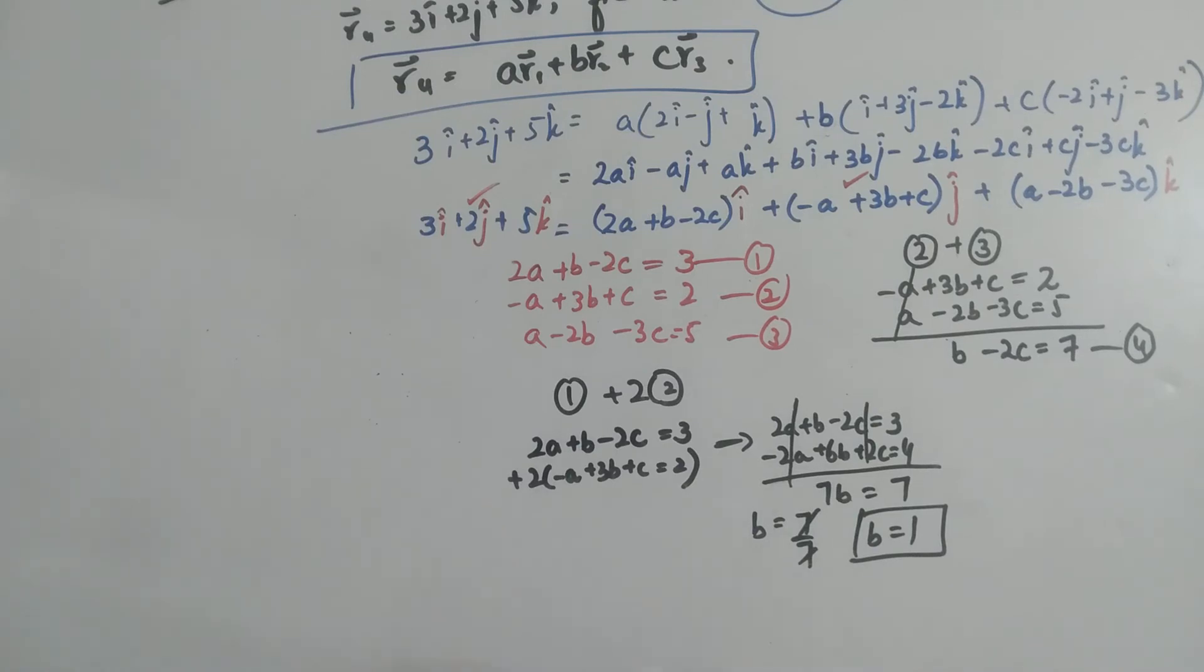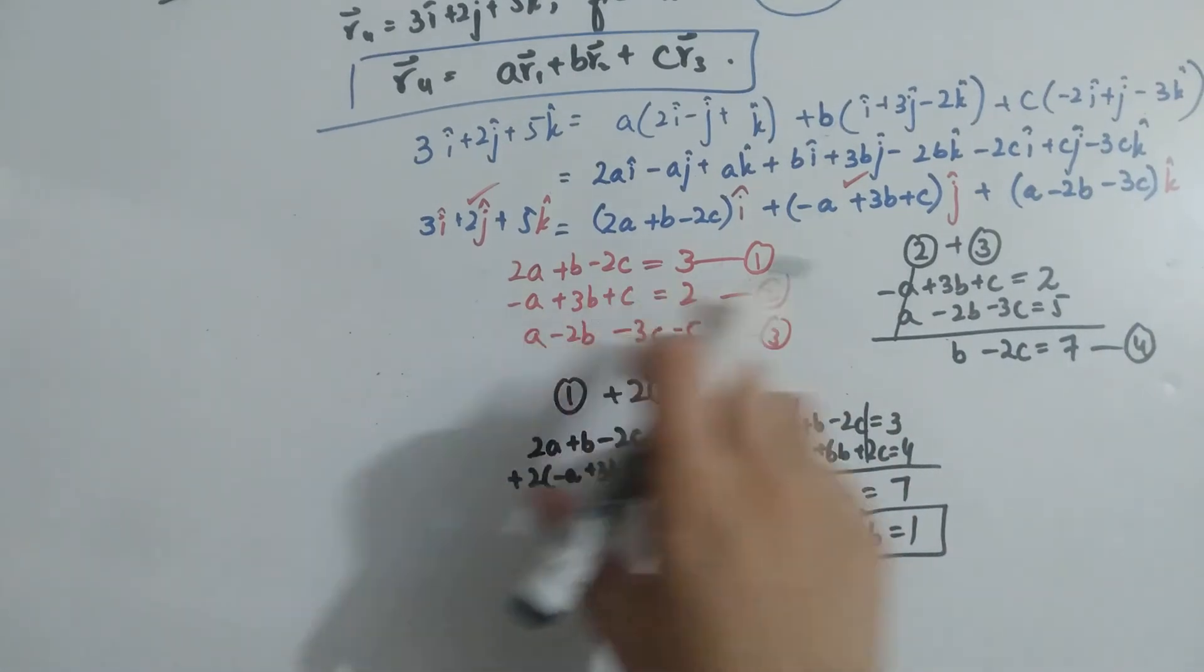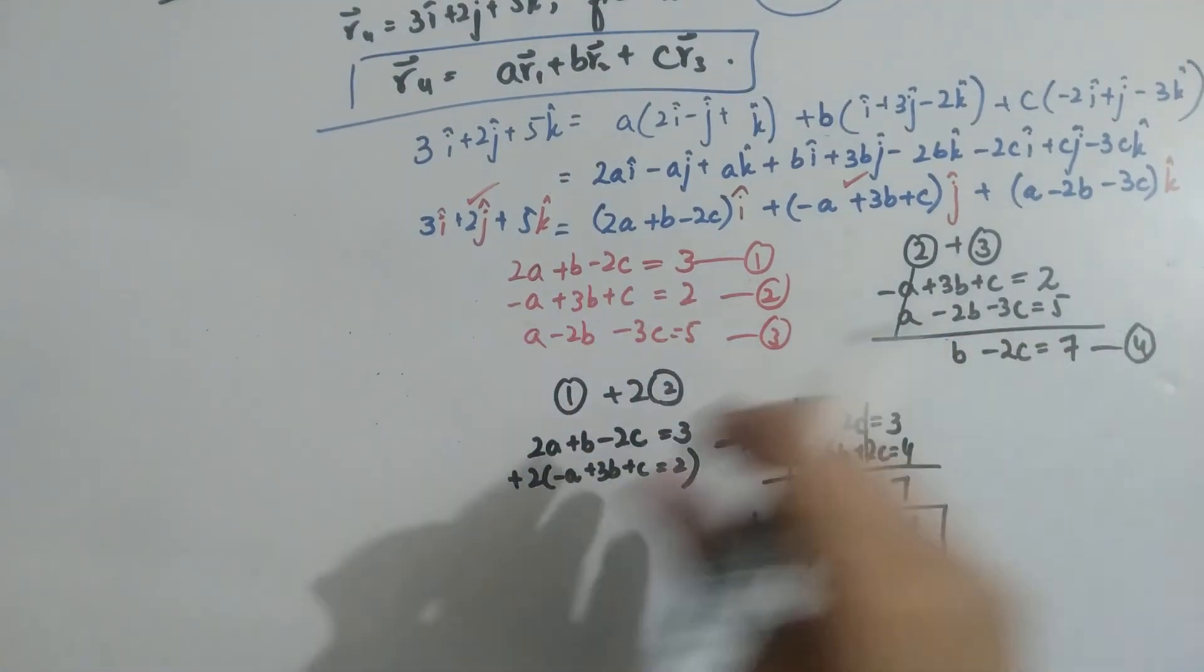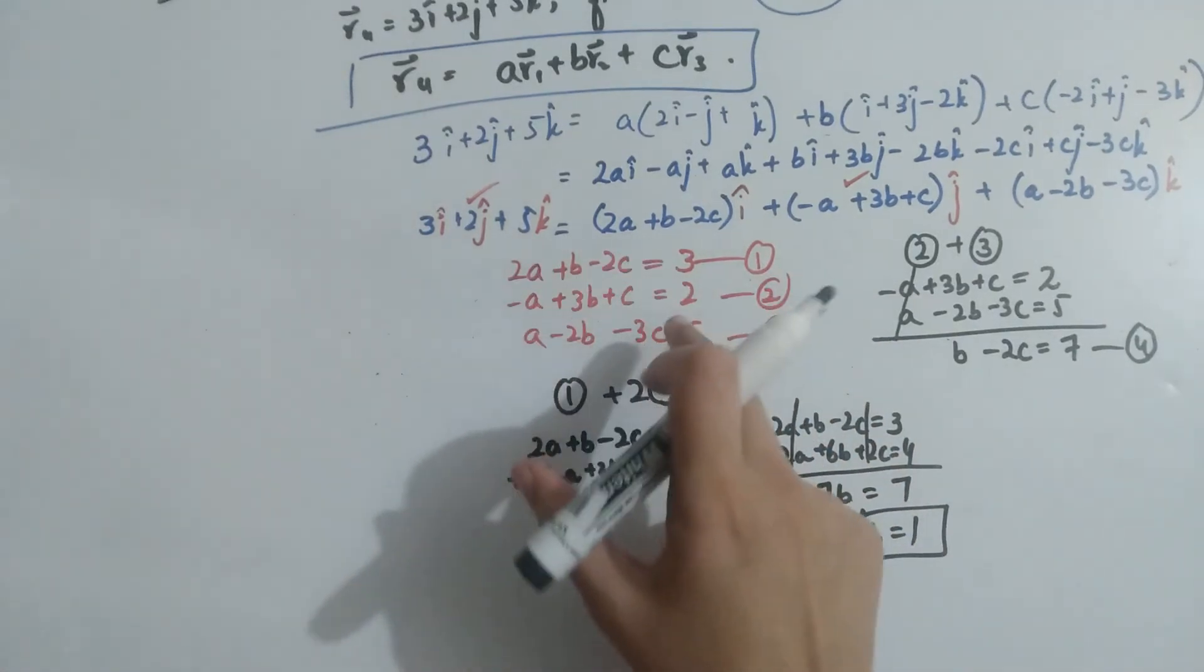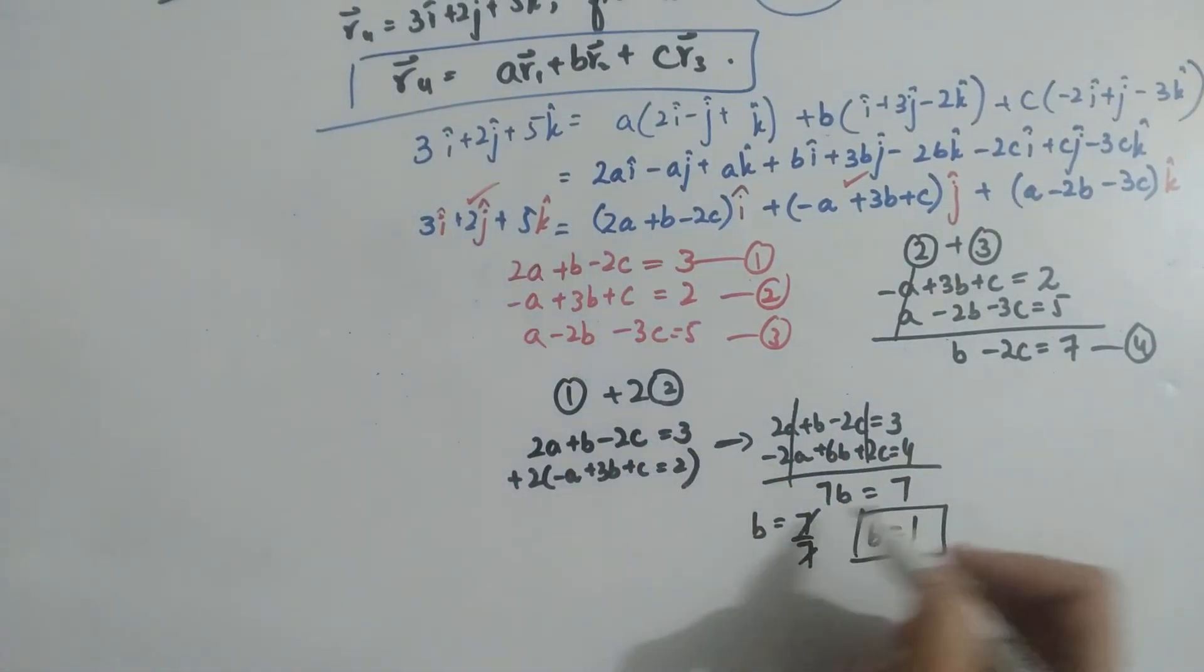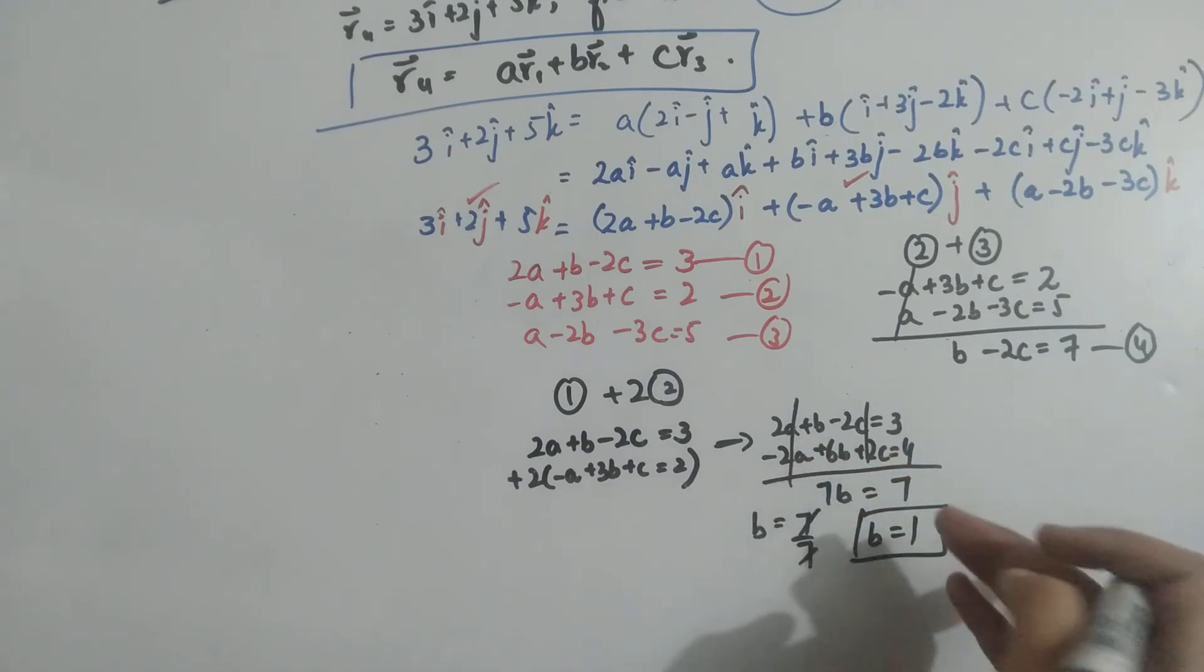You guys know how to solve equations simultaneously. I have simply added equations 2 and 3 so that A and A cancel. Then equation 4 becomes B minus 2C equals 7. And I have done equations 1 and 2 times 2, so A cancels and we get the value of B. Now simply we put the value of B in equation 4.